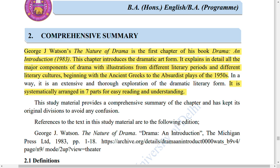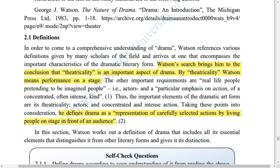The Nature of Drama is the first chapter of Watson's book Drama and Introduction, published in 1983. In this chapter he introduces the dramatic art forms and explains the major components of drama with full illustration, covering different literary periods and cultures from ancient Greek to the Theatre of the Absurd. The chapter is systematically arranged in seven parts for easy reading and understanding.